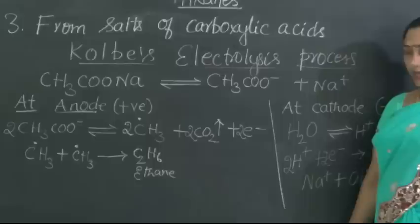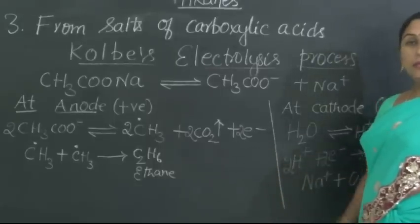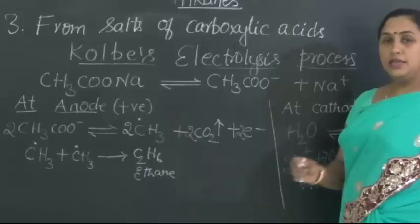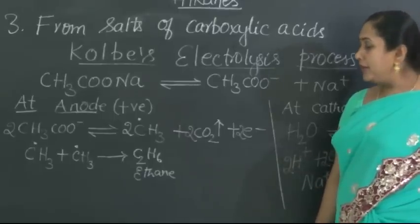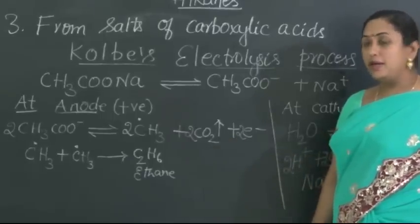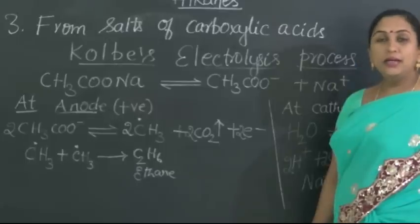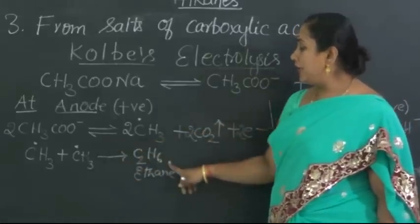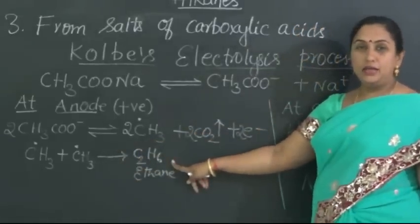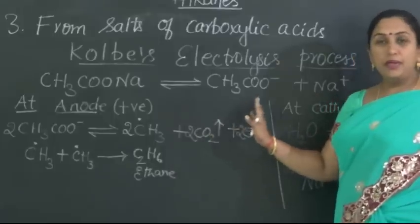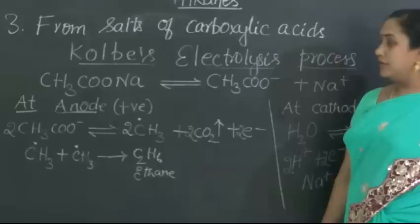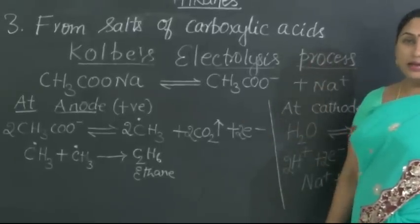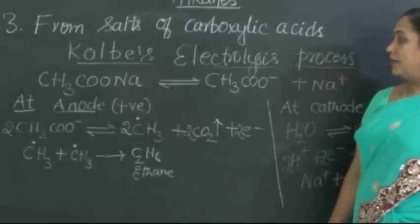Now, the point of focus here is that we cannot prepare methane by this phenomenon. For the reason, methane is containing only one carbon atom, whereas in this process whatever we can prepare would be the ones which would be containing more number of carbon atoms. As we can see, two methyl radicals combined to form the higher alkane. So, therefore, we cannot prepare methane by this process. This one should bear in mind. So, apart from methane, many other alkanes can be prepared by the same general method.